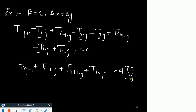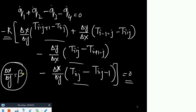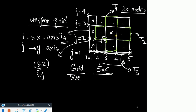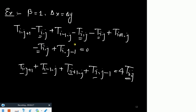So T(i,j) is what we need to find, and there are four surrounding neighboring points required. For this central node, all four surrounding values are also unknown. So you write down the same energy balance equation for all those points and then solve them simultaneously.